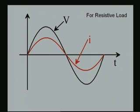Coming back to the resistive load circuit, the voltage source waveform and the resulting current waveform are sinusoidal and in phase. Now we shall apply a process: we will multiply the voltage waveform and the current waveform. The voltage is in volts, the current is in amps — when you multiply V and I we get watts. So we will produce the instantaneous power waveform P equal to V times I by multiplying these two signals point by point, instant by instant.